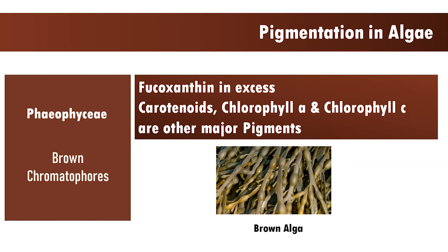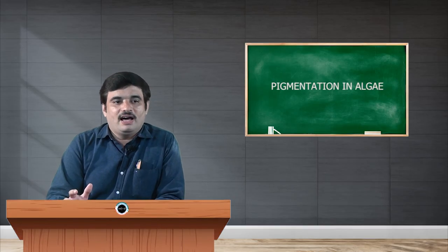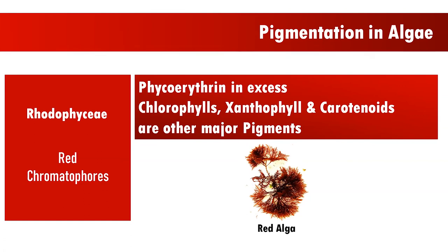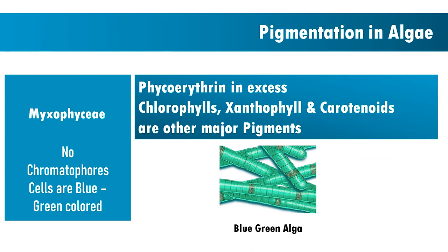Phaeophyceae, or brown algae, members have brown chromatophores where fucoxanthin is the excess pigment, along with carotenoids, chlorophyll a, and chlorophyll c. Rhodophyceae, or red algae, have red chromatophores where phycoerythrin is the characteristic pigment, along with other chlorophylls, xanthophylls, and carotenoids.